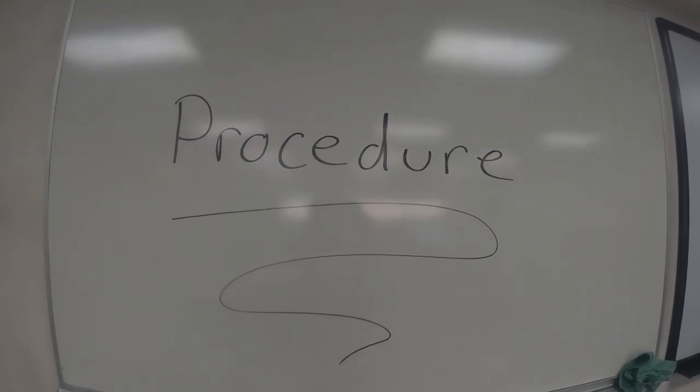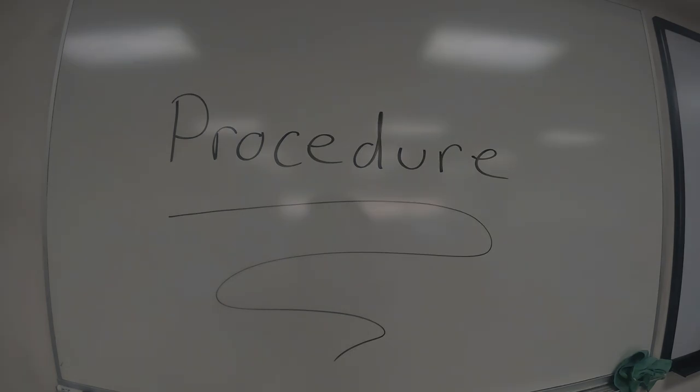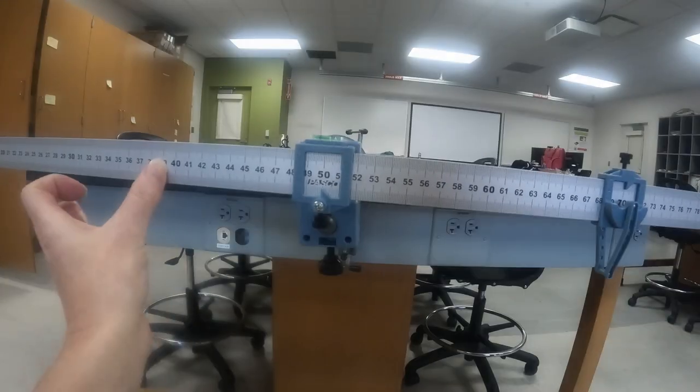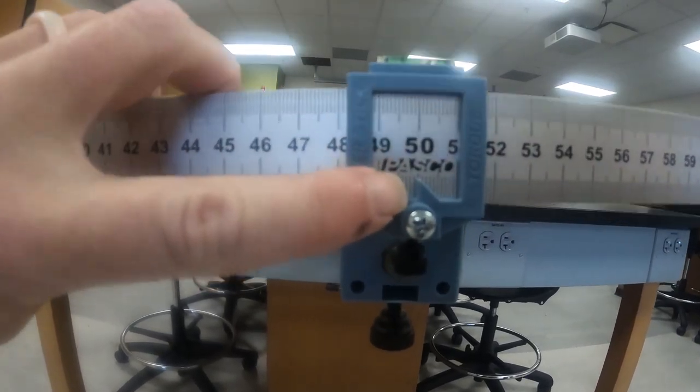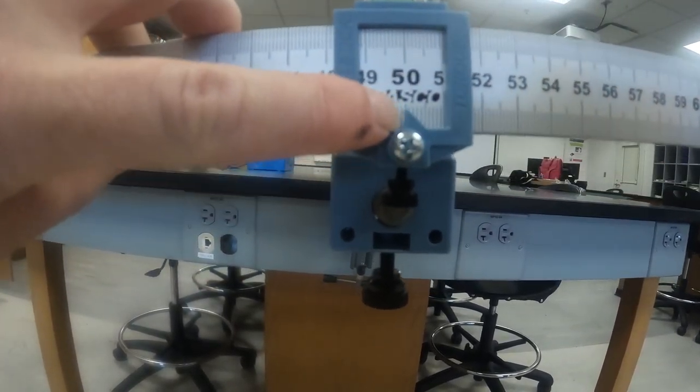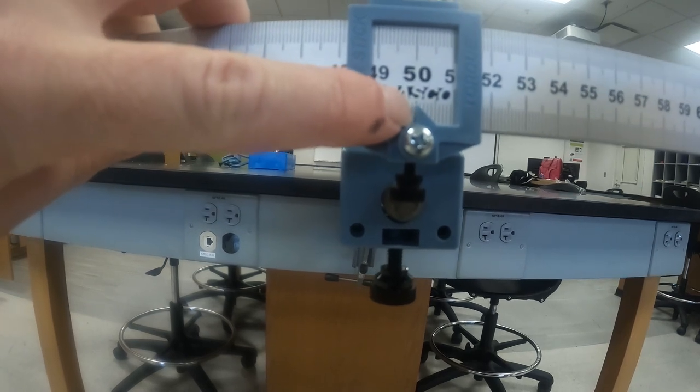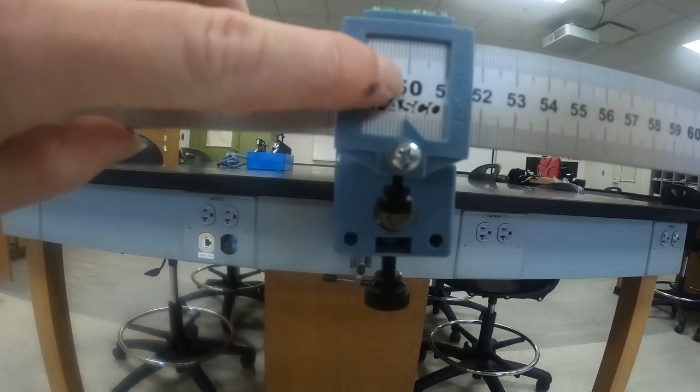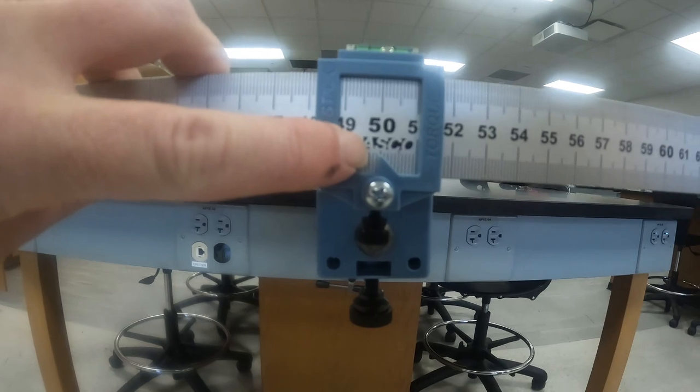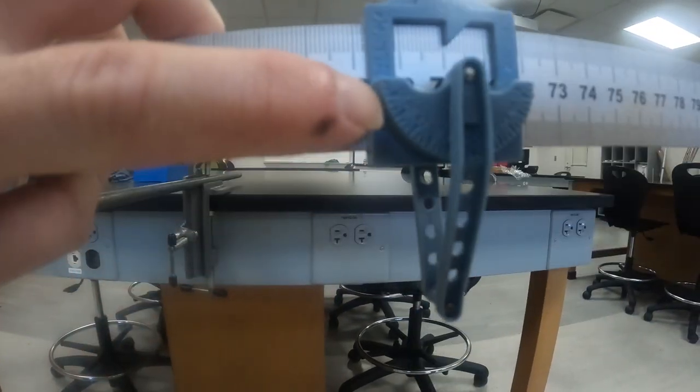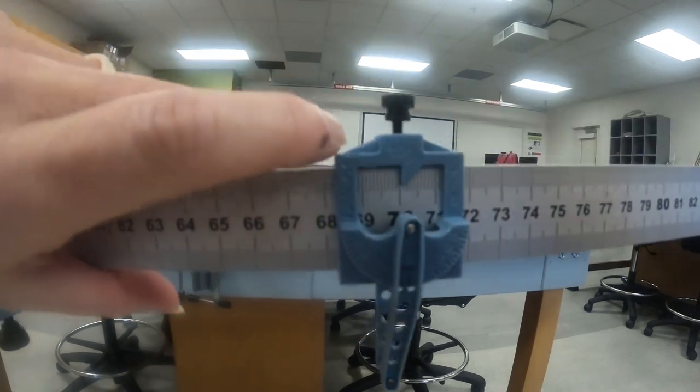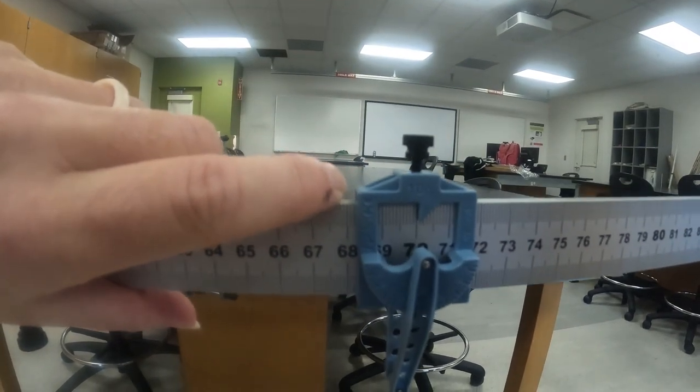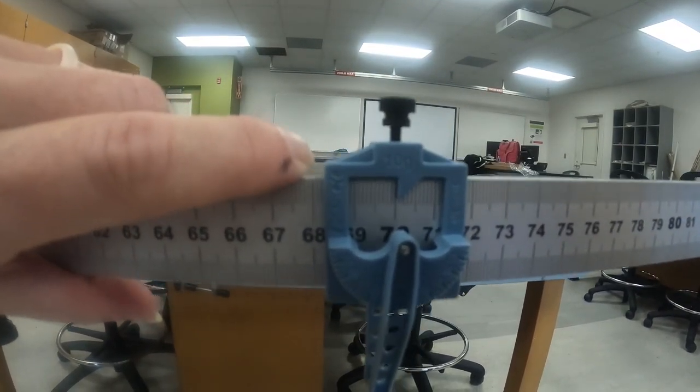Procedures. Please note how to read the distances. Notice this arrow right here. This is the arrow that I'm using to read. So this is set up at 50, the centimeter mark. Mass holders have the exact same arrow. So this one would be read at the 70 centimeter mark.